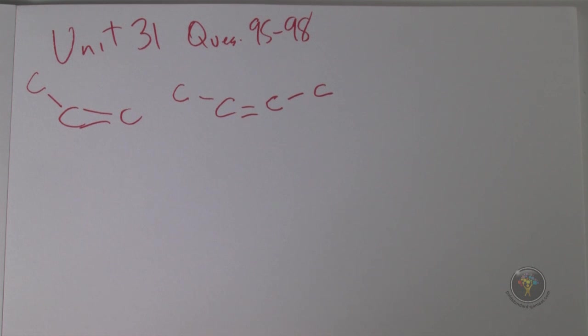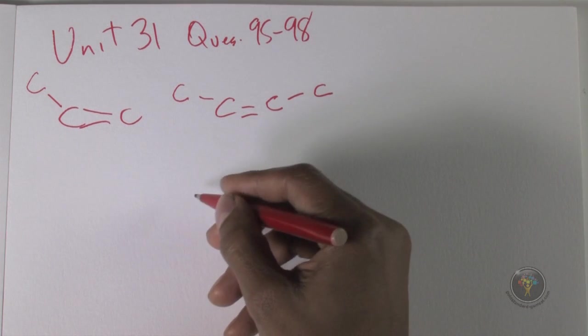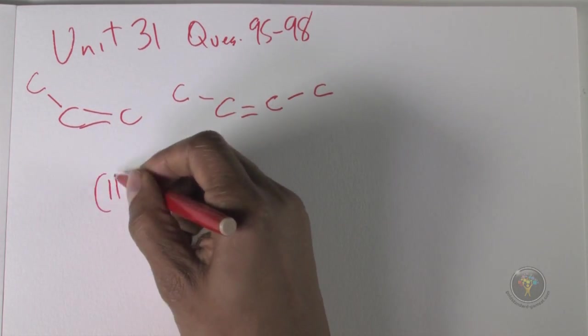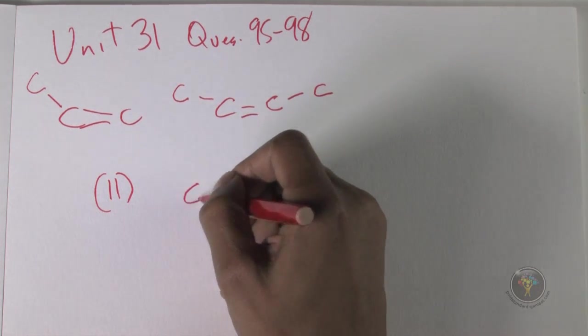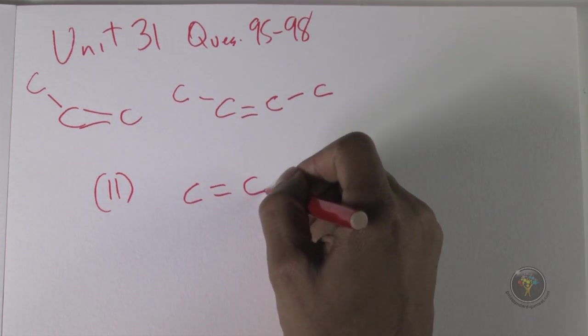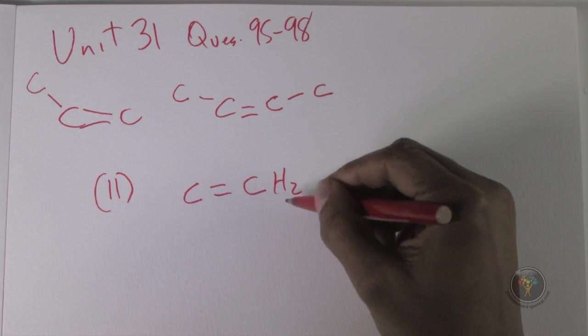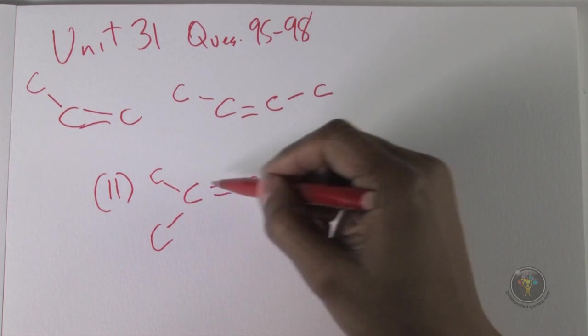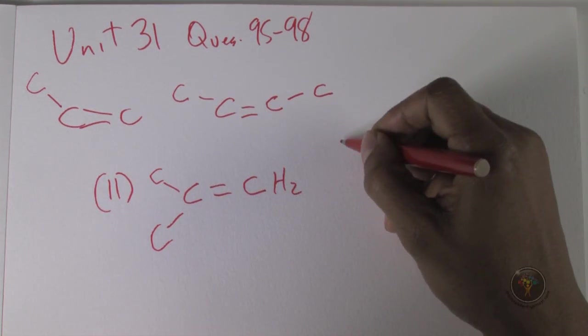Product number two is di-substituted because I'm looking at product number two, you're going to see that it has carbon, carbon, and there's hydrogen here. This is not considered any substitution. Then there's a carbon group and another carbon group, so this is di-substituted.